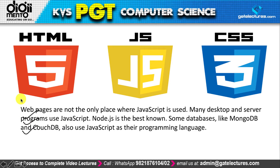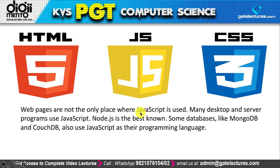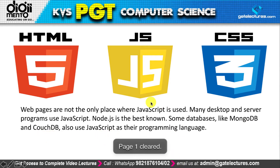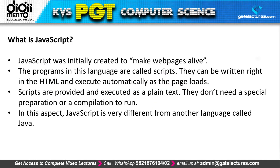Web pages are not the only place where JavaScript can be used. Many desktop and server programs also use JavaScript. For example, Node.js is a well-known example — it is created with the help of JavaScript. Some databases like MongoDB and CouchDB also use JavaScript as their programming language, so you can see JavaScript in various places beyond web browsers.